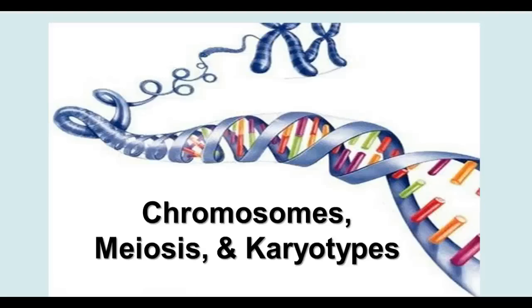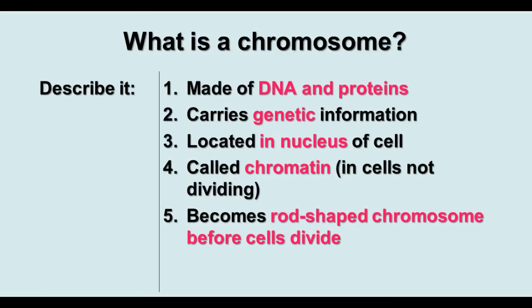These notes are about chromosomes, meiosis, and karyotypes. A chromosome is made of DNA and proteins, and it carries genetic information found in the nucleus. When the cell is not dividing, we call it chromatin. Just before the cells divide, in prophase, it becomes the rod-shaped chromosomes.